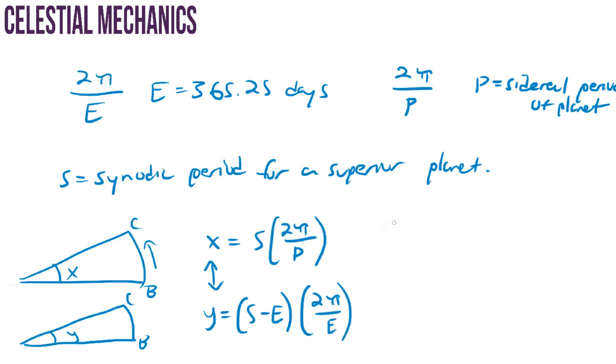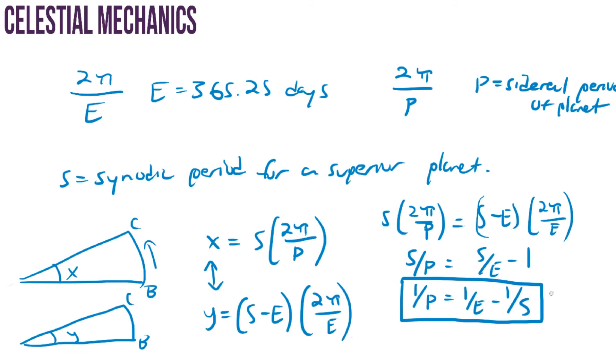Since these angles are equivalent, we can say that S times two pi over P is equal to S minus E, two pi over E. Rearranging this equation, we get that S over P equals S over E minus one, because this is E over E. Now if we divide everything by S, we get that one over P equals one over E minus one over S. And this here is the equation to link both synodic and sidereal periods for a superior planet.